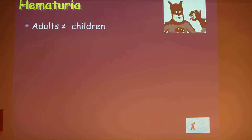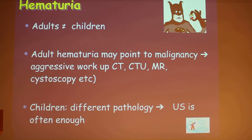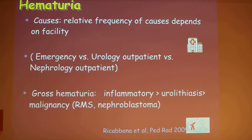Another GU emergency is the patient who presents with hematuria. The usual mantra in pediatric lectures is that children are not just little adults, and it holds true. Whereas in adults hematuria may point to malignancy requiring aggressive workup with CT, CTU, MR, MRU, cystoscopy, and biopsy — in children it's a whole different ballgame. The reasons are usually benign, and in most cases you can address them using ultrasound first.